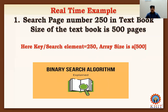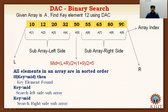Let us discuss the binary search algorithm with a simple example. Consider an array of size 10, with 10 elements placed in it, starting from index A[1] to A[9] — so the first index is A[1] and the last index is A[9], with the array index starting from 1 and ending at 10.